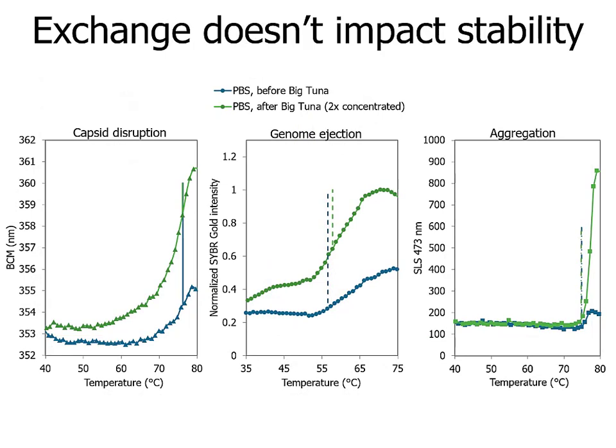When we compare our samples before and after Big Tuna in PBS buffer, we saw really no significant changes in capsid disruption temperature, genome ejection temperatures, or aggregation using SLS. So buffer exchange had really no impact on stability. However, the SYBR Gold intensity is a lot higher in the more concentrated samples — which makes sense because there's more DNA for SYBR Gold to bind. Similarly, the SLS results show a much higher signal because more particles in a sample produce more static light scattering.